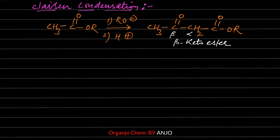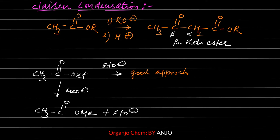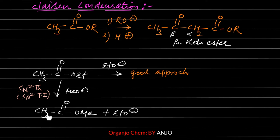Trans-esterification occurs when the base and the ester's leaving group are different. For example, if an ester has an OEt leaving group but sodium methoxide is used as the base, the reaction can proceed via SN2TH or SN2TI mechanism, converting some ester molecules into a different ester. Since methoxide and ethoxide have almost the same leaving tendency, some ester molecules will inevitably be converted. This interconversion of one ester into another is called trans-esterification.